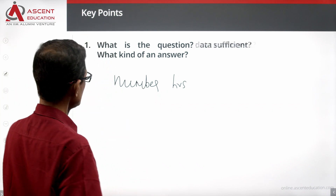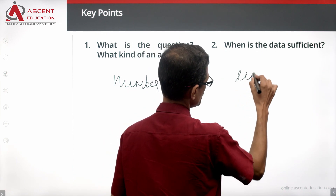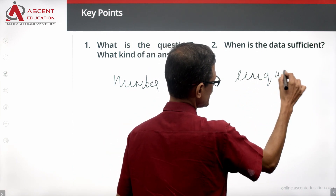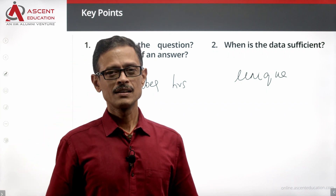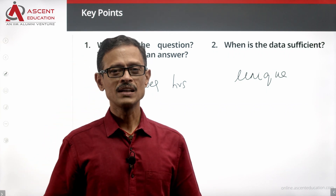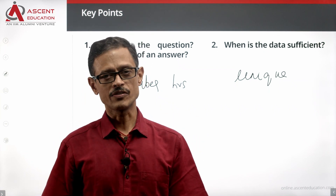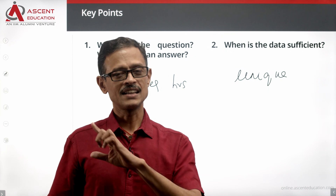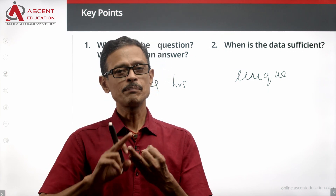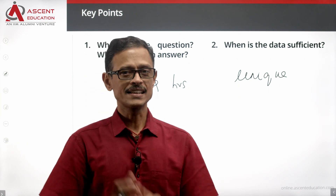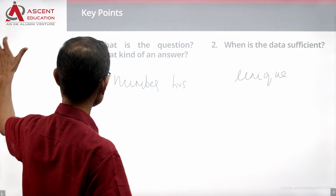How is data sufficient? Data is sufficient when we get a unique answer. A unique answer means we get exactly one possible answer from the given information. If we can get more than one answer, then the data is not sufficient. So we know the answer is going to be a number followed by a unit of time, and we need a unique value for data to be sufficient.